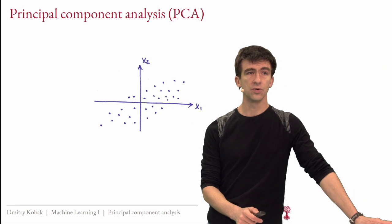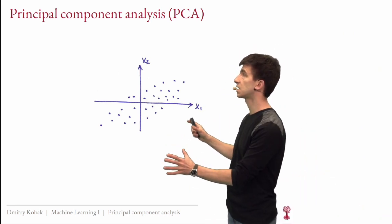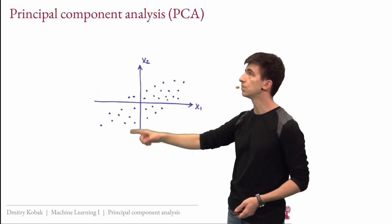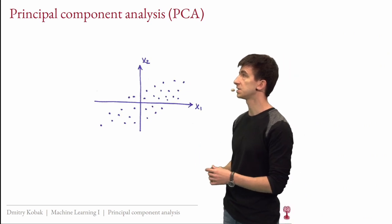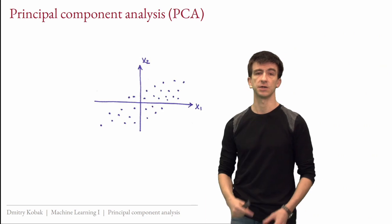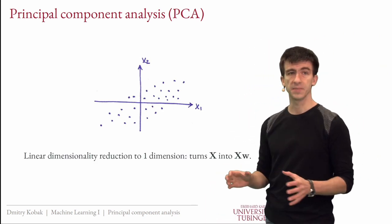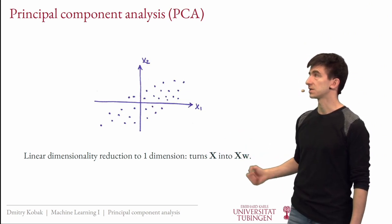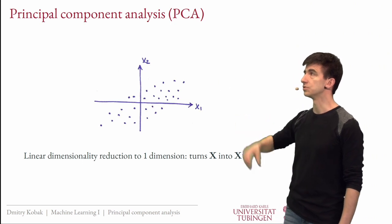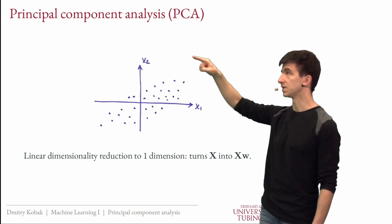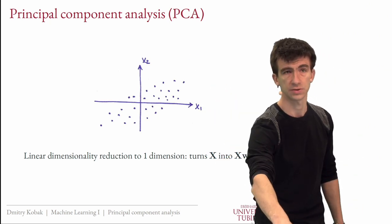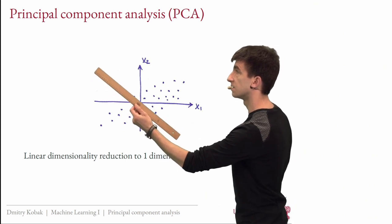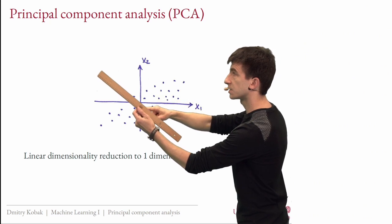PCA can be used for both goals. Let me start with some toy data: a two-dimensional dataset with feature one and feature two, which are correlated. In this simple setting, I'm going to reduce the number of features from two down to one. PCA is a linear method, which means we transform our data x into x times some vector w — we're projecting all samples onto a new axis. We're not picking one of the existing axes; we project onto a new axis.